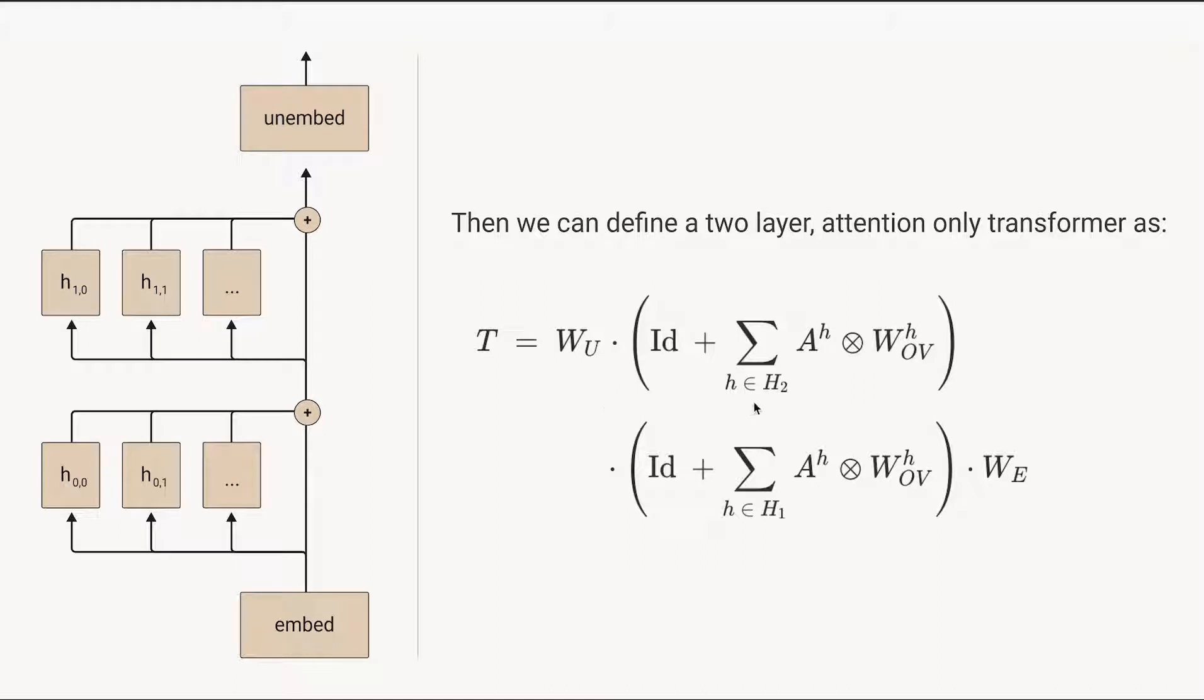So here we have our two layer attention-only transformer. We start by going and applying the embedding. So that's at the bottom here. Then we're going to talk about the first attention block.